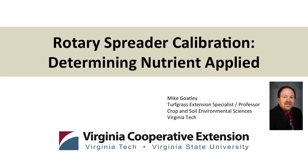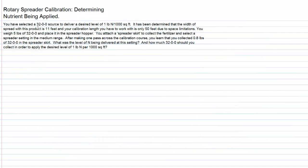Now we're going to do some calculations with a rotary spreader to be calibrated and determine the nutrient being applied. In this example we have selected a 32-0-0 source and we want to deliver it at a level of one pound of nitrogen per thousand square feet.